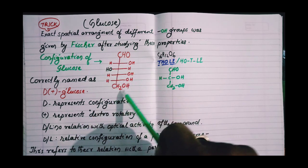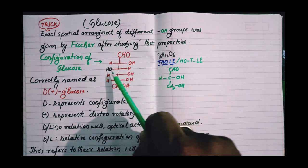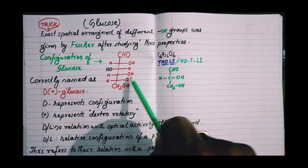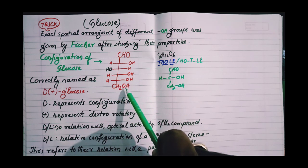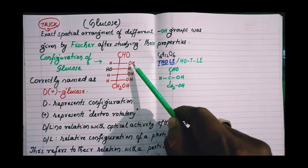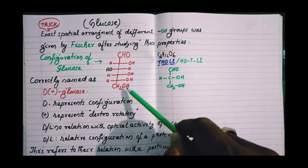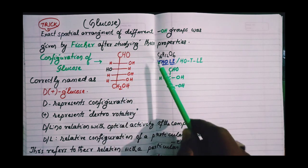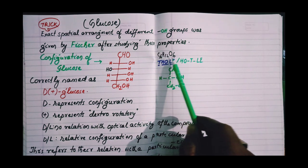Configuration of glucose as shown over here: CHO-HCOH-HOCH-HCOH-HCOH-CH2OH. It has 6 carbon atoms and 5 OH groups, 1 CHO group, and its molecular formula is C6H12O6.